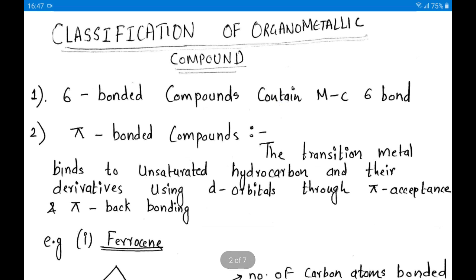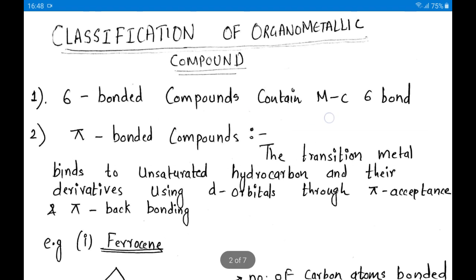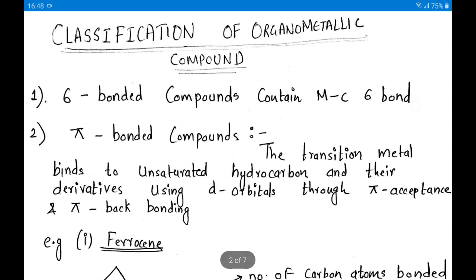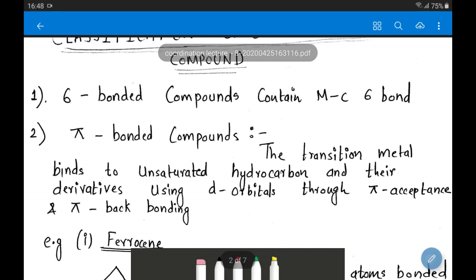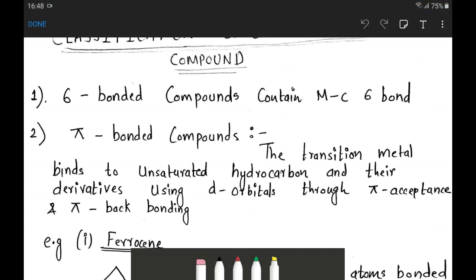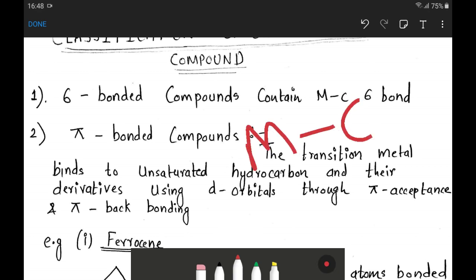The classification of organometallic compounds has three categories. The first category is sigma-bonded compounds. Sigma-bonded compounds contain only a metal-carbon sigma bond — only one type of bond is present, which is the metal-carbon sigma bond formed through head-on overlapping.